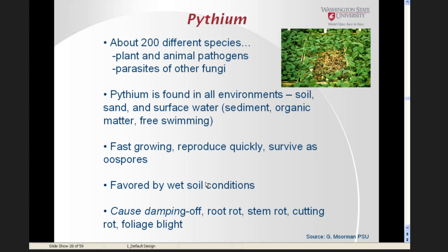Gary Moorman at Penn State University has done a lot of work on Phytophthoras in ornamental situations. There are about 200 different species, of which about 100 are plant pathogens; there are also some animal pathogens and parasites of other fungi. Pythium is found in all types of environments — soil, sand, and surface water — where it can exist in sediments, organic matter, and as free-swimming zoospores. Pythiums are fast-growing, reproduce quickly, and survive long periods via oospores. They are a significant problem in greenhouse production of ornamentals, particularly in recirculated water systems, and cause damping off, root rots, stem rots, and foliar blights.